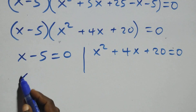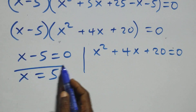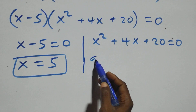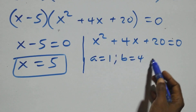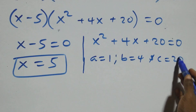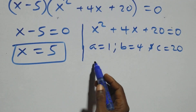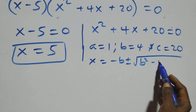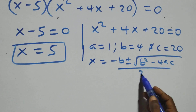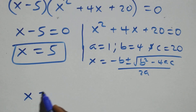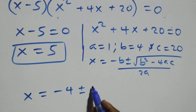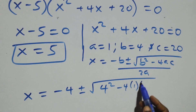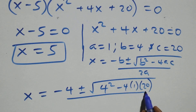From here, this gives x equals to 5, which is a real solution. Then for the remaining quadratic equation, we have a equals to 1, b equals to 4, and c equals to 20. Applying the quadratic formula: x equals to minus b plus or minus square root of b squared minus 4ac, all over 2a. This becomes x equals to minus 4 plus or minus square root of 4 squared minus 4 times 1 times 20, all over 2 times 1.